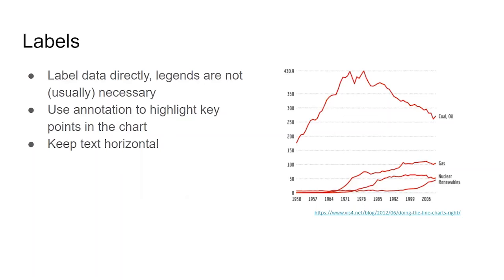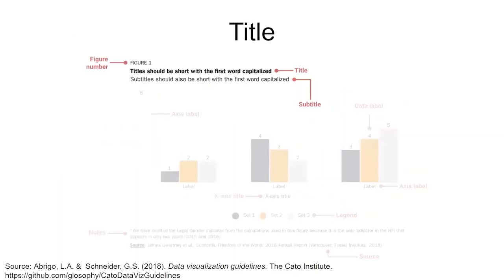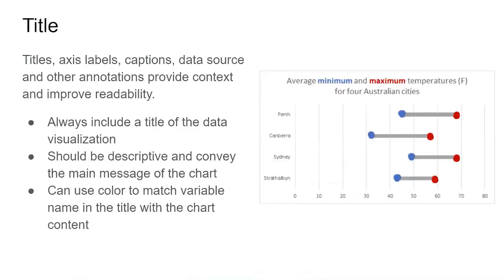Sometimes we require text to help understand and provide context for the content of our visualizations, such as legends, notes, and labels. Labeling data directly can eliminate the need for a legend and reduce the number of colors needed in a chart. Data labels can also be used for annotation to highlight key points in the chart. When using labels, it's important to keep the text horizontal so it's easier to read. The title of the chart should summarize the message being displayed in the content, which sometimes requires a subtitle. Titles, axis labels, captions, the data source, and other annotations provide context and improve readability, and therefore should always be included. One way to link the chart content to the title is to use the same color for a variable in the title and the chart content.